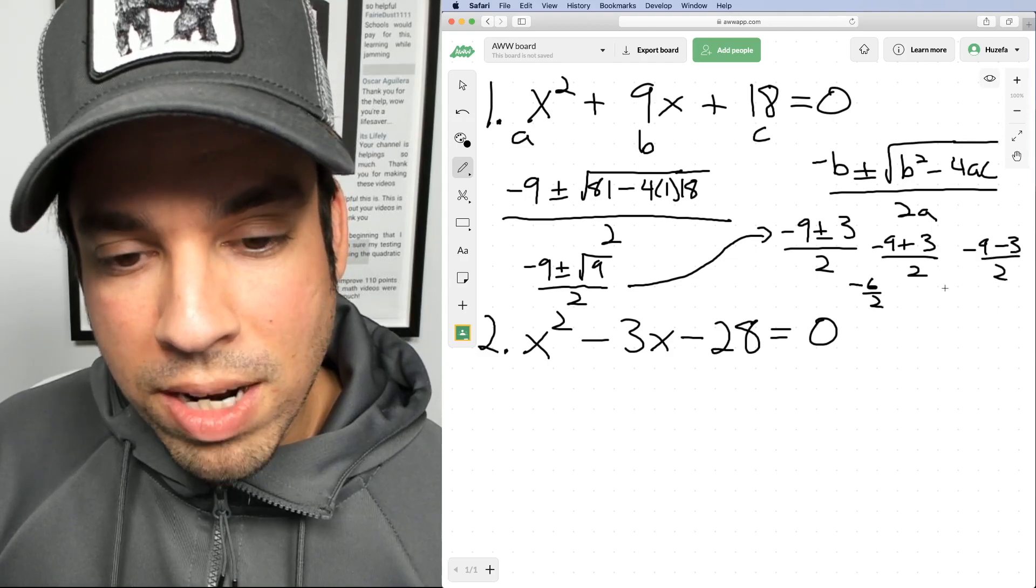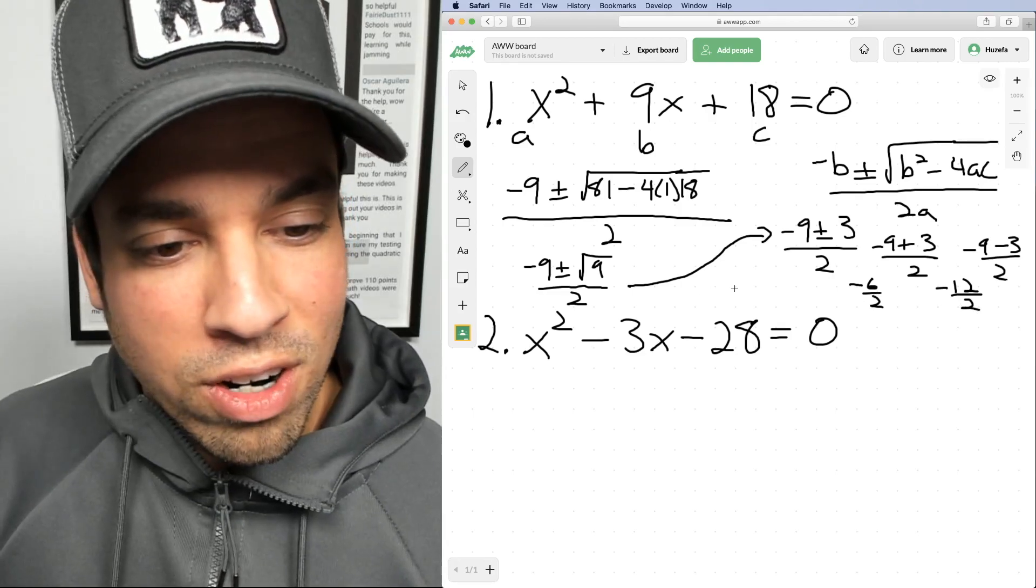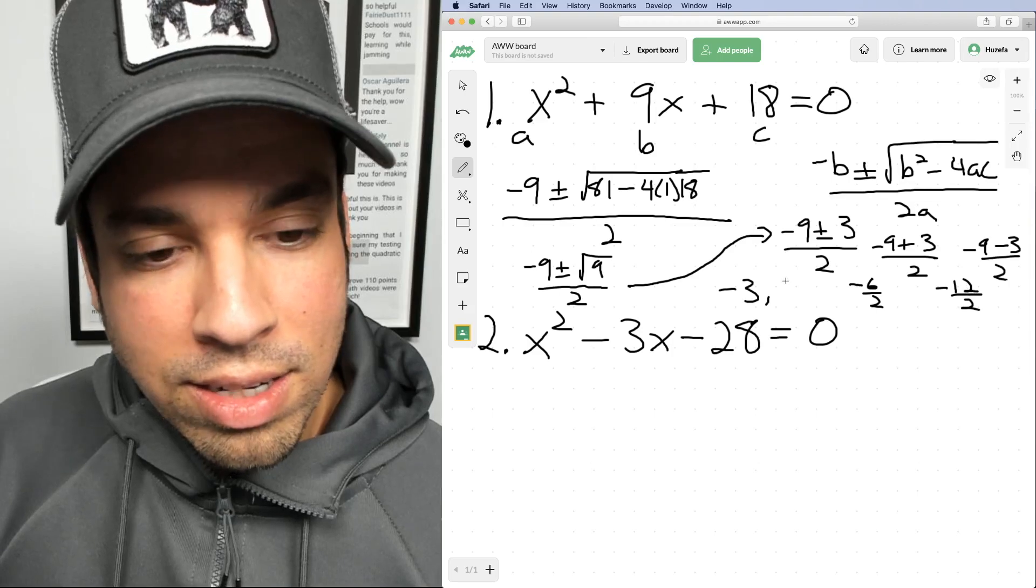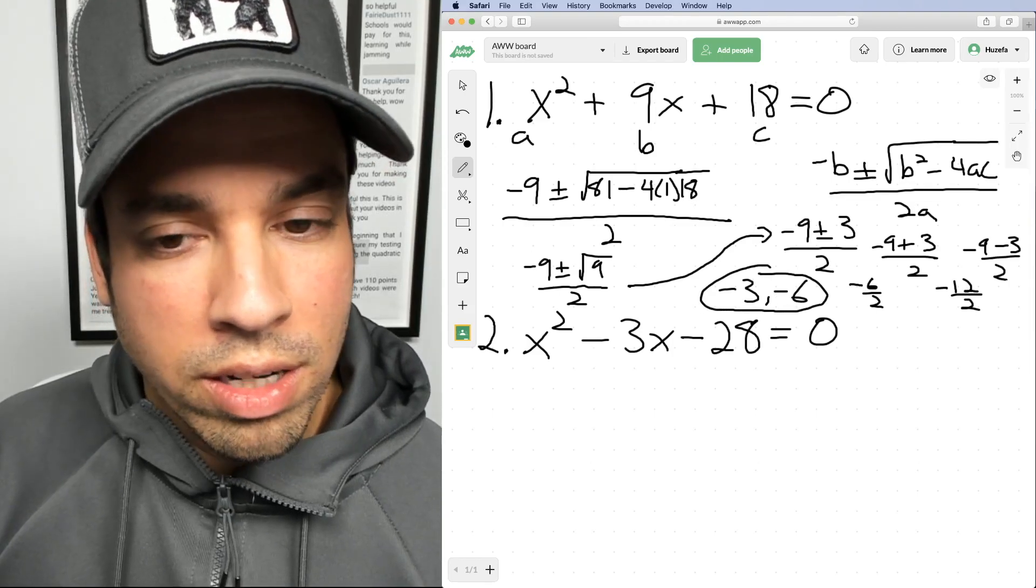We're a little short on space, but you can see the answers are gonna be negative three, negative six divided by two, and negative six, negative 12 divided by two. And those are our answer choices.